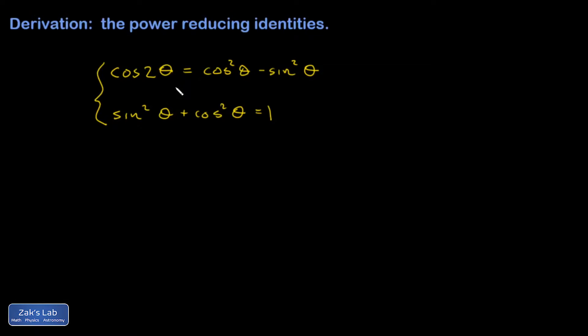The identity on top here is called a double angle identity for the cosine function. So the cosine of twice an angle is going to be cosine squared minus sine squared.